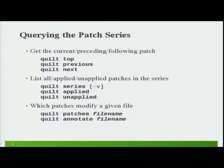Finally, you have two commands that tell you which files are modified and which patches modify a given file. The 'patches' command gives you a list of patches. The second command is more like 'git blame' — it annotates the file and points, for every line, to the patch which last modified that line.